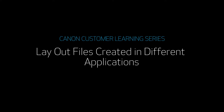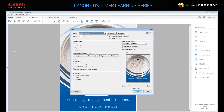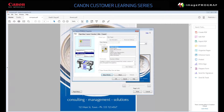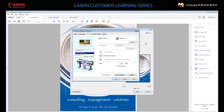Let's start with laying out objects created in different applications. Click File, Print. In the application's Print Settings dialog, select your ImageProGraph device and then click Properties to display the ImageProGraph printer driver. Click the Layout tab and then enable Page Layout. With Page Layout enabled, choose Free Layout from the list and click Set.